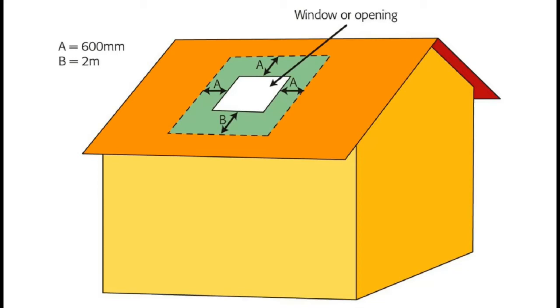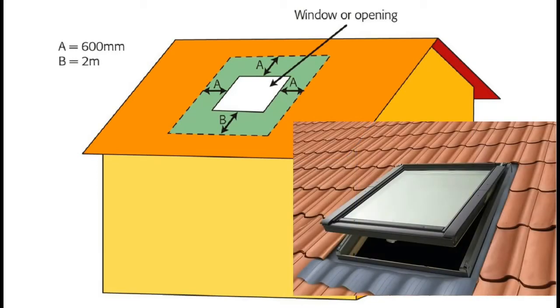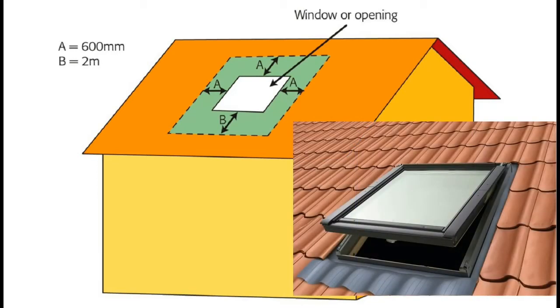In reality a Velux window looks like that. In this diagram it shows you that you cannot place a terminal nearer to that window than 600 millimetres horizontally to the side or 600 millimetres above it.